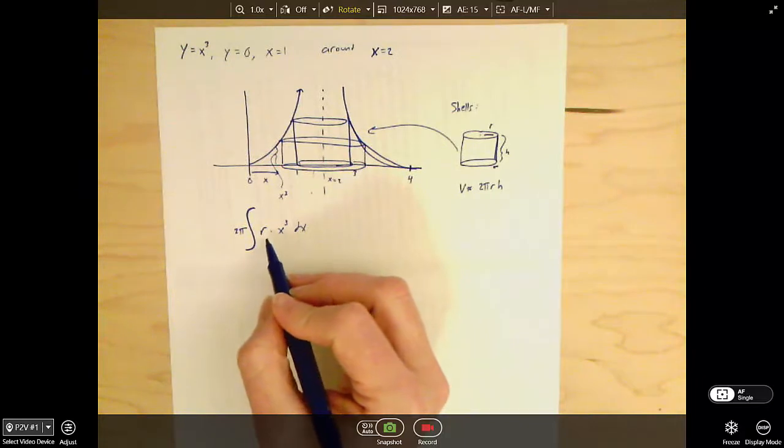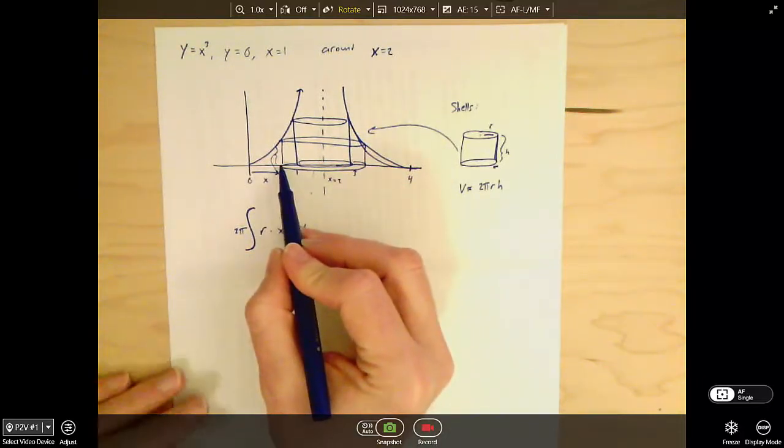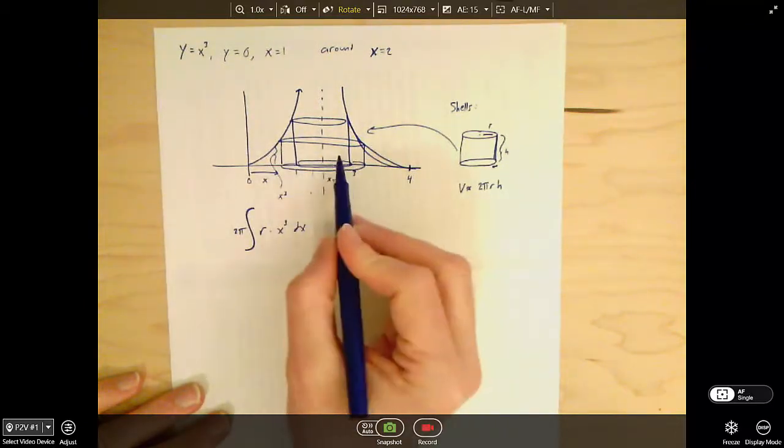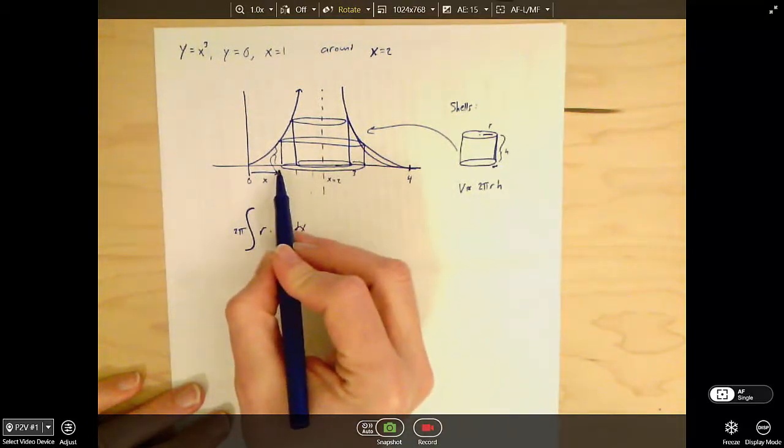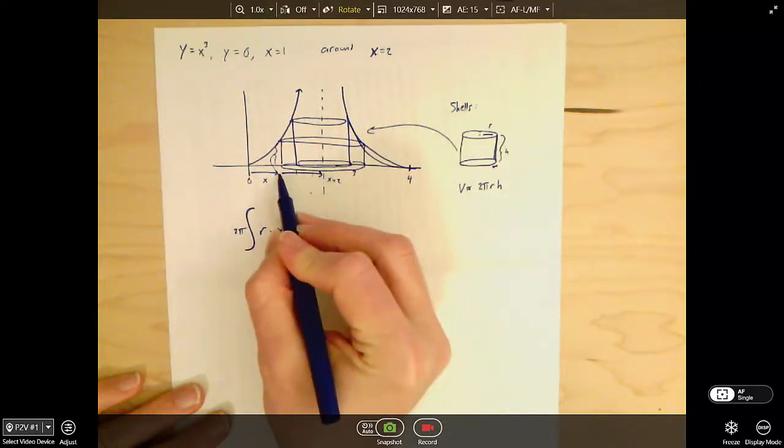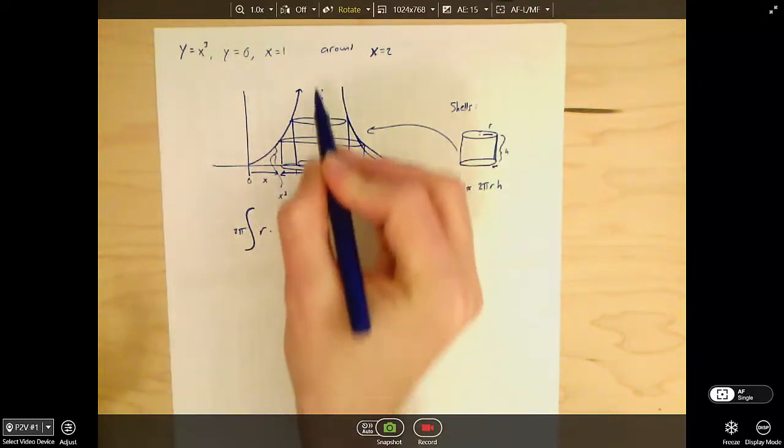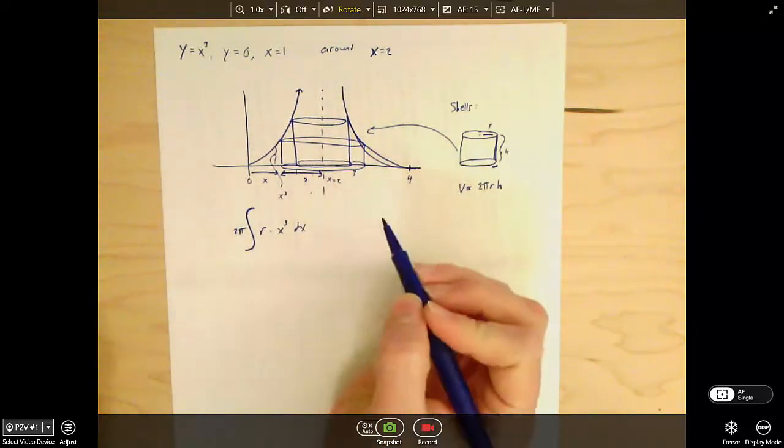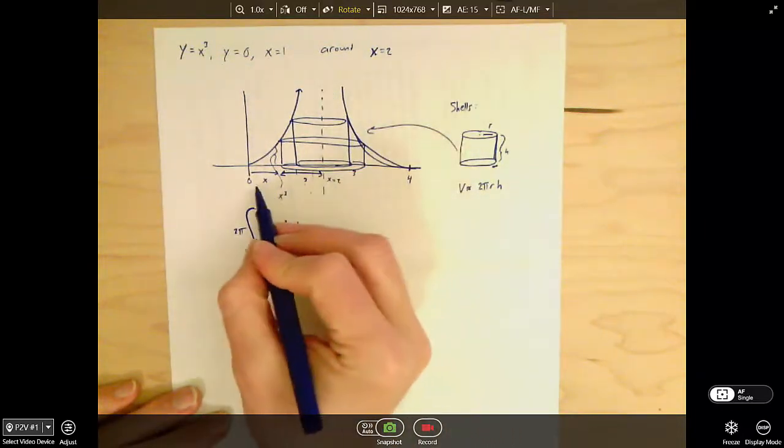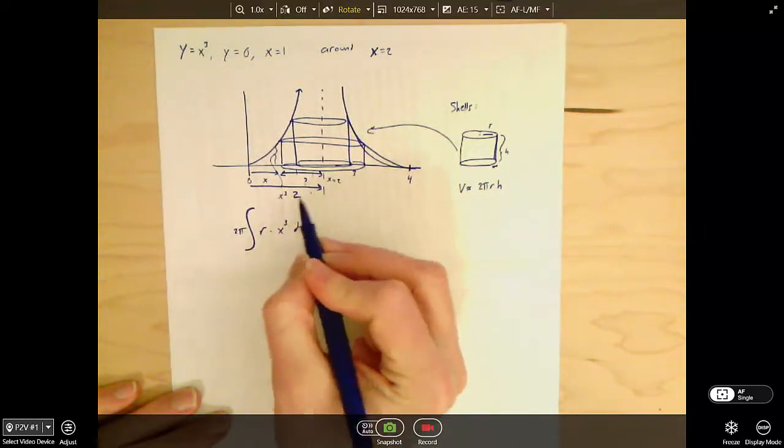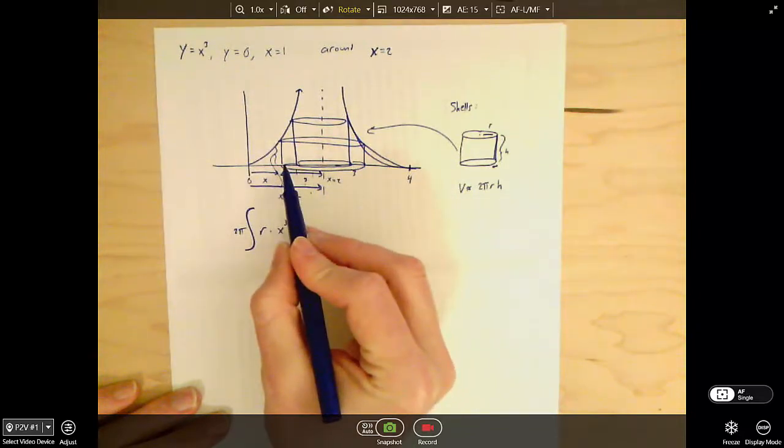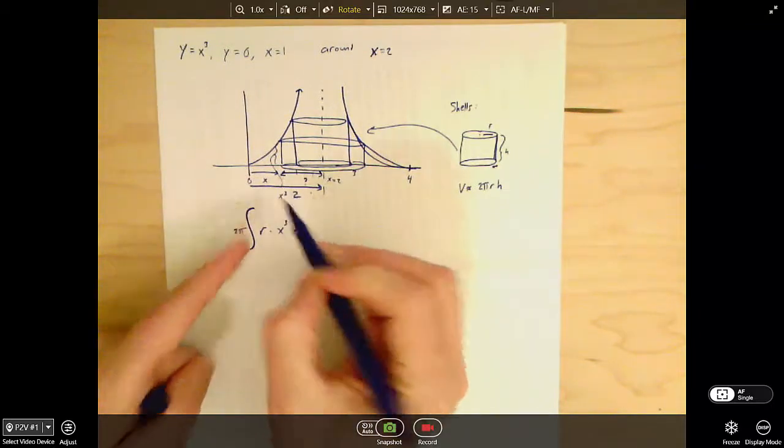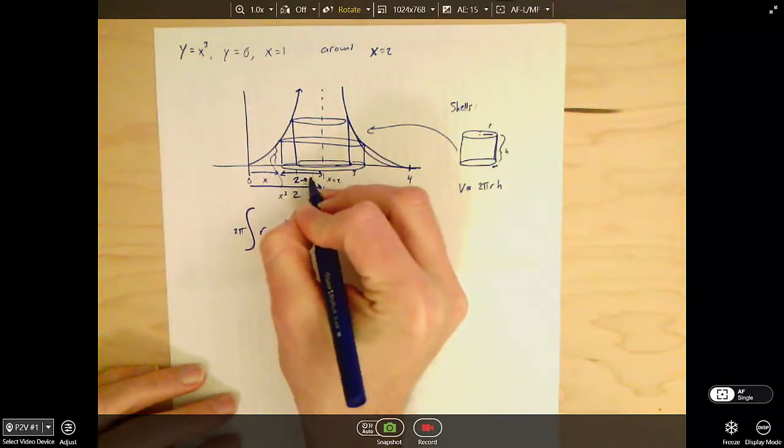In the problem we did in class, the radius was actually the x-coordinate that we chose, because we were rotating around the y-axis. But here, if I look at the picture, obviously this distance is not the same as my radius, because my radius is this distance. The distance from the axis of rotation over to the point we care about. So the question is, how do we find that thing? Well, I know the axis of rotation is at 2, so I know that full distance is 2. I know that this distance is x, therefore this remaining distance must just be 2 minus the x. So I'll write 2 minus x here.